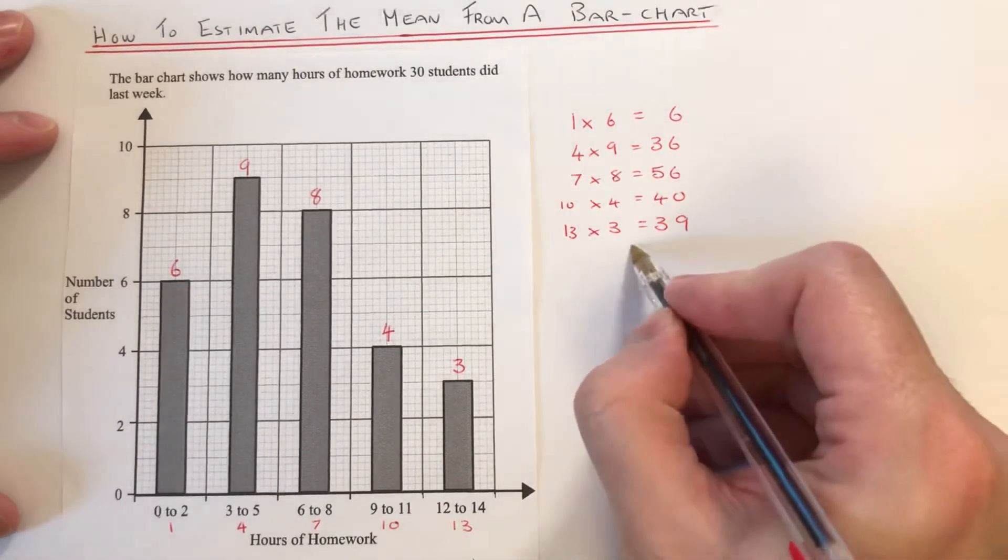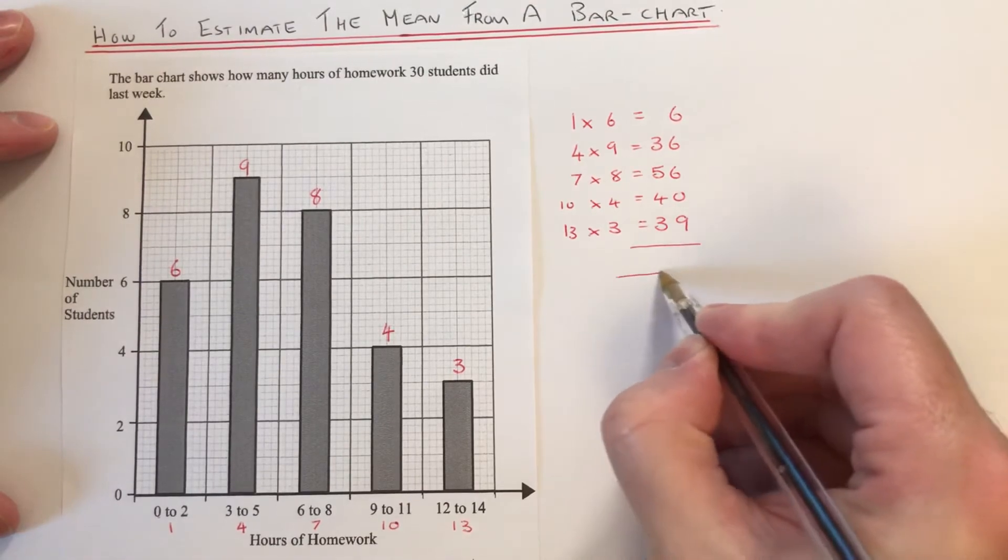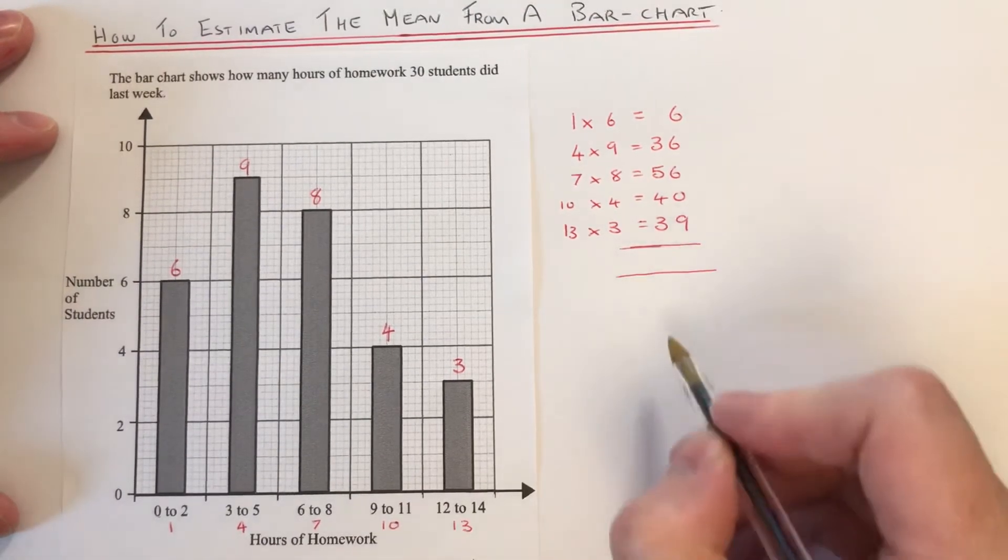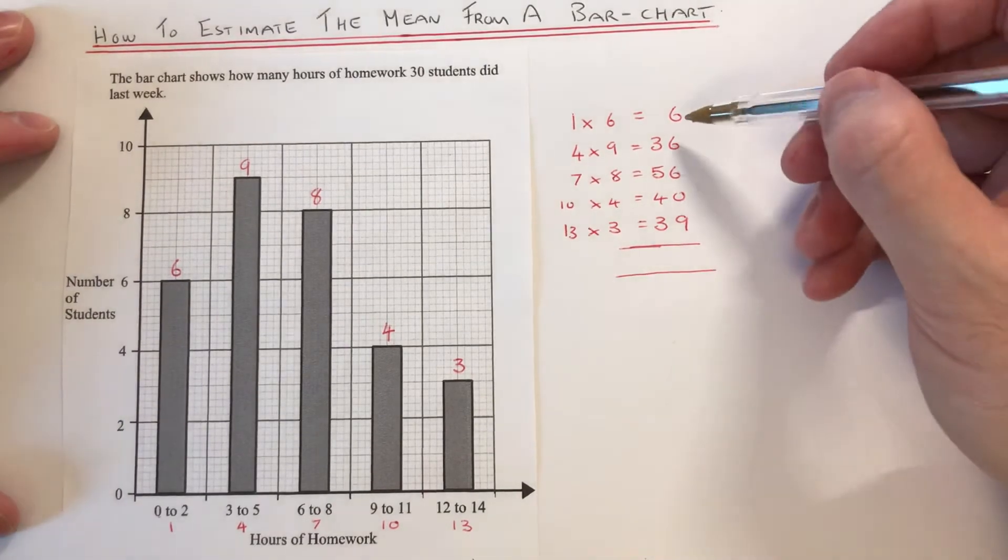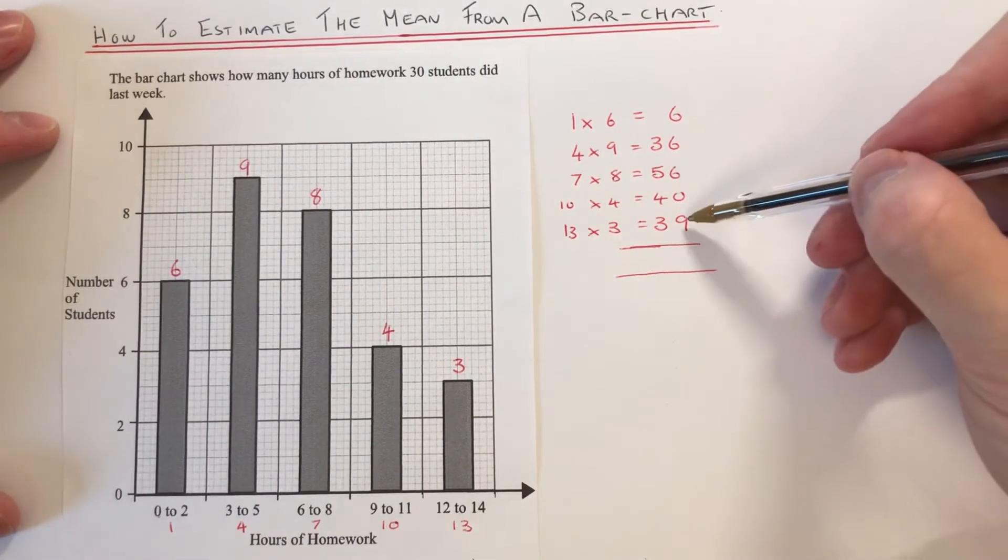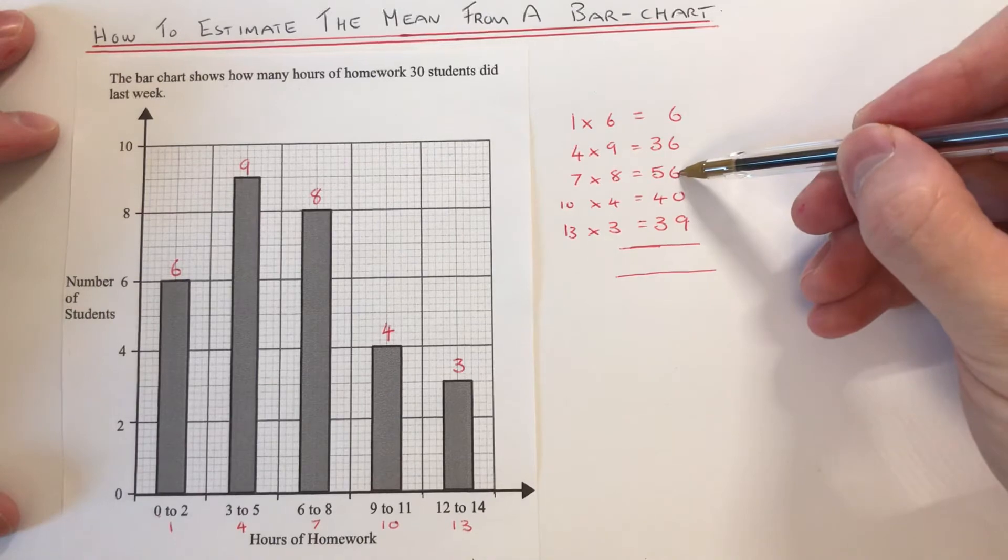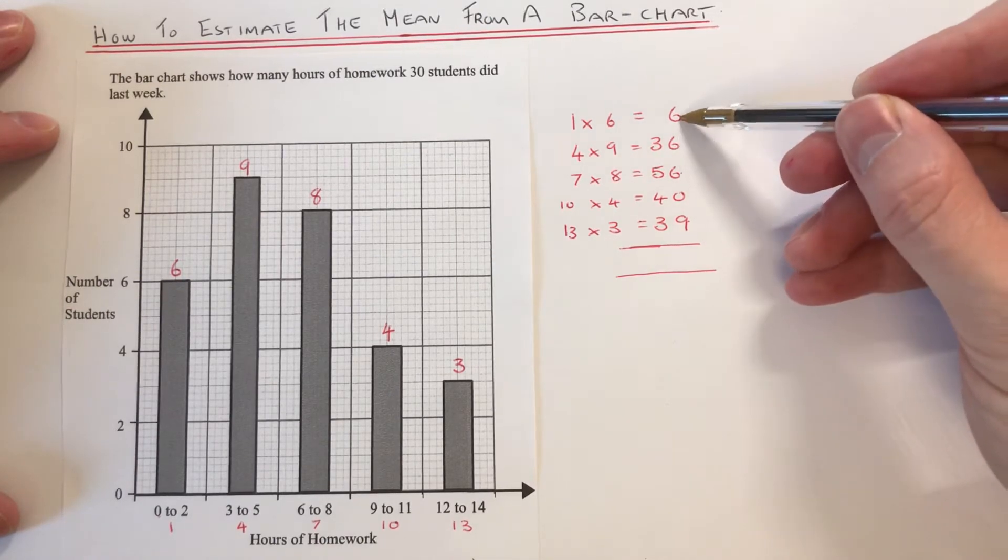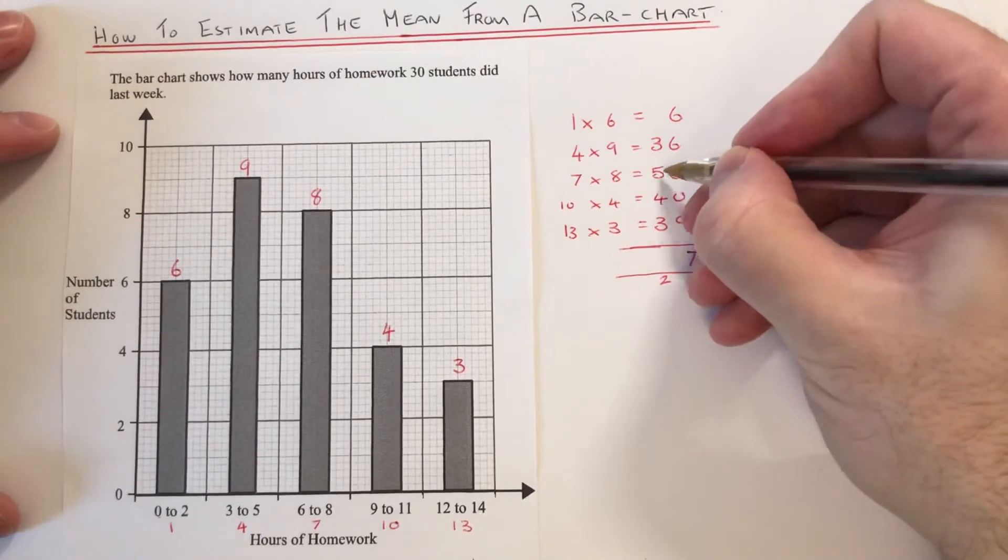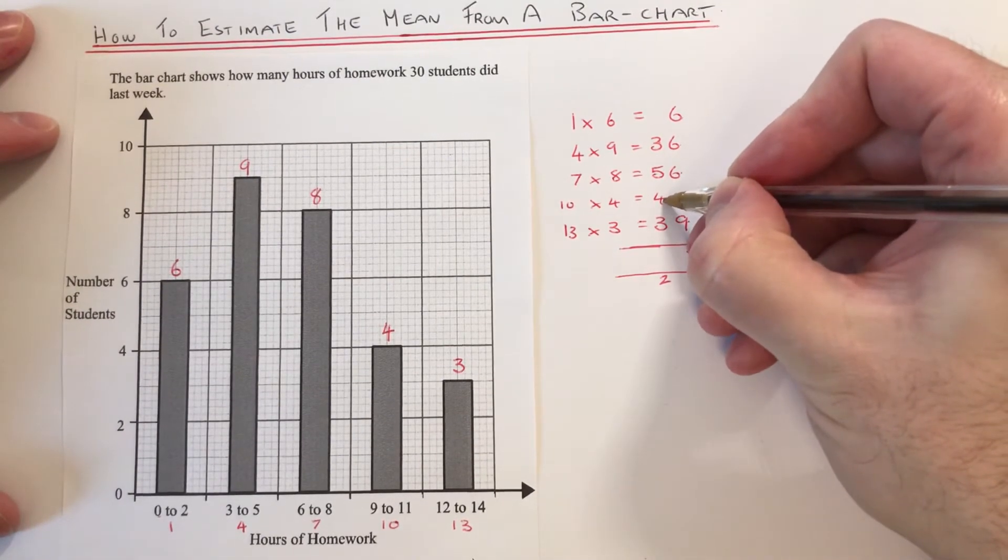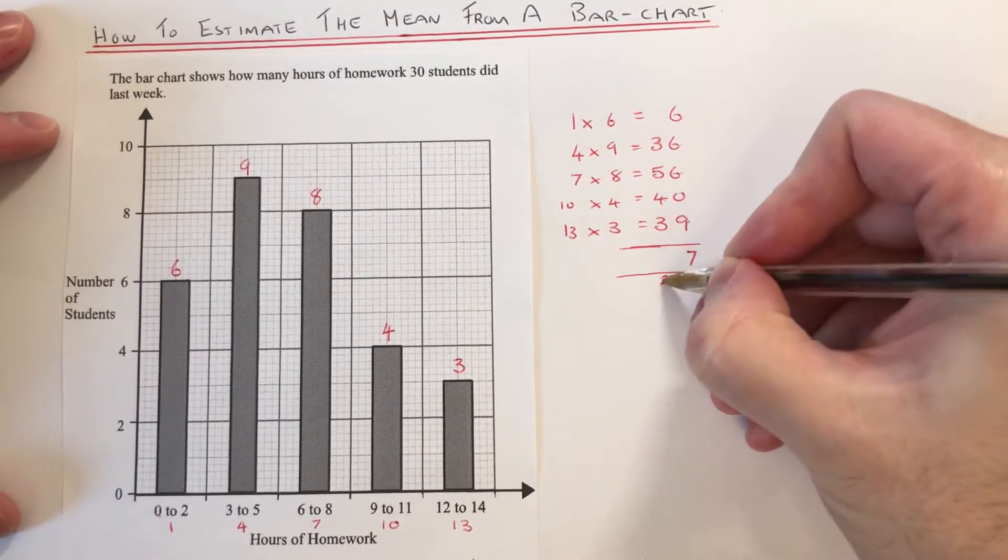So if we add all these numbers up, this will give us the total amount of hours of homework by all 30 students. So we've got 9, 15, 21, 27, 3, 8, 12, 15, 17.